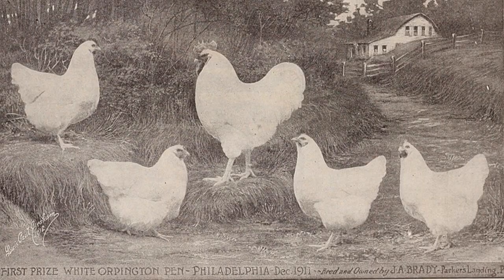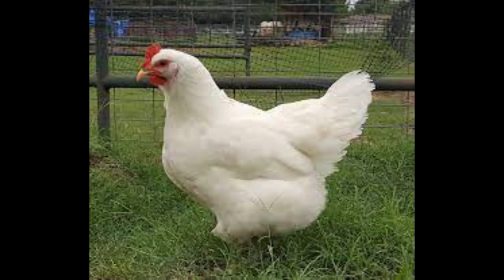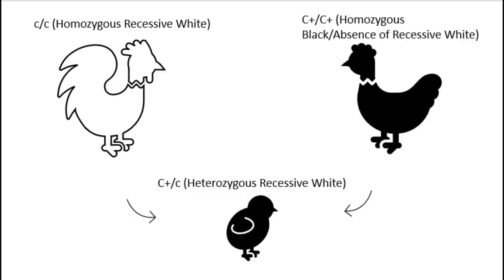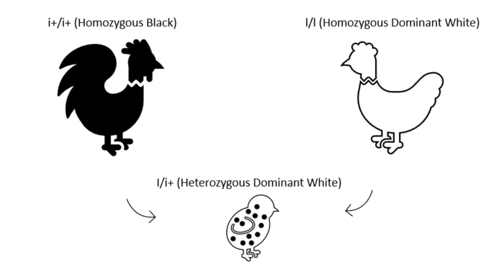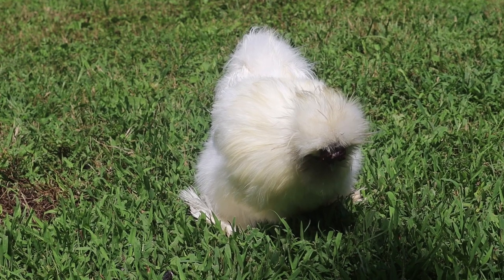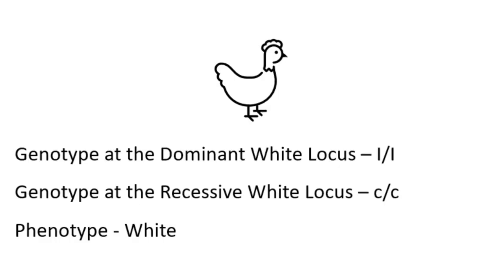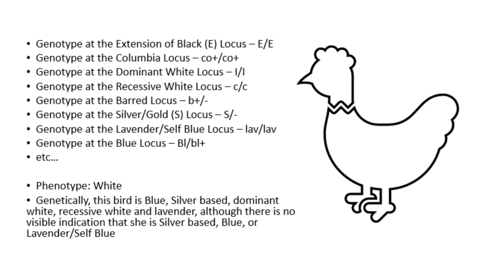Oftentimes the white seen in breeds like Orpingtons, Wyandottes, White Plymouth Rocks, and Jersey Giants is caused by recessive white. Some breeds, like silkies, could be either way. If your white silkie came out of a paint pen, it is most likely dominant white. If it came out of a pure white pen, it could be homozygous dominant white, homozygous recessive white, or both — as was the case with my male Poe. Another way to tell is by test breeding. If you breed a recessive white bird to any color — provided that bird does not carry recessive white — none of the offspring should be white. If any offspring are white, you are dealing with dominant white; they will most likely come out paint, which is white with black splotches. A bird can indeed have dominant white and recessive white at the same time, because they are on two different loci.